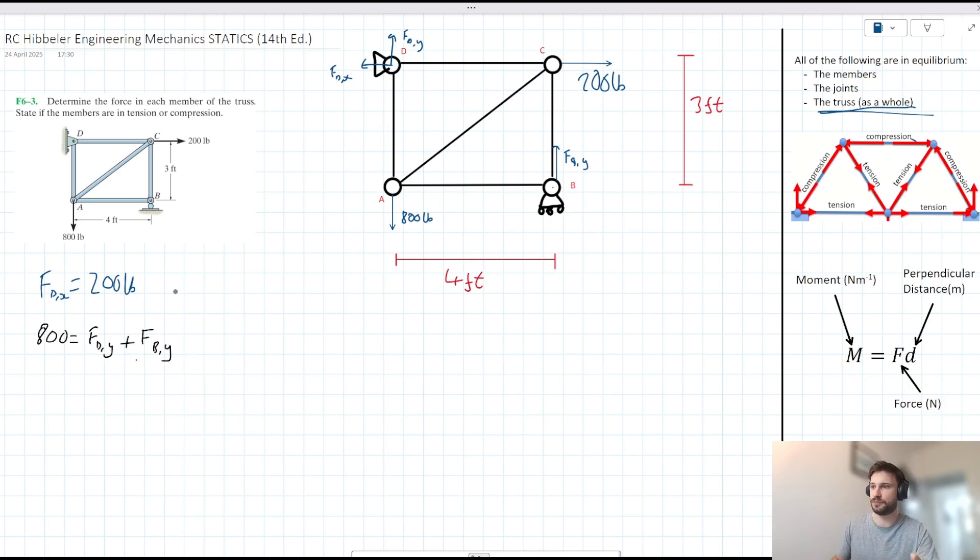But we can provide ourselves with a basis to solve for FD-Y or FB-Y by taking moments. We can say here that the sum of the moments acting... Which points should we pick to take moments about? We want to solve for FD-Y and FB-Y. I'm going to pick joint D because it's eliminating the moments that come about from FD-X and FD-Y. And it enables us to solve for FB-Y here. So I'm going to say the sum of the moments acting at D acting anti-clockwise is equal to 0. Therefore, the moments acting clockwise are equal to the moments acting anti-clockwise about D.